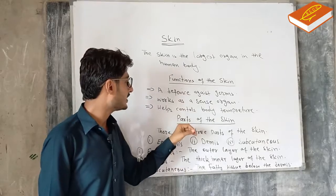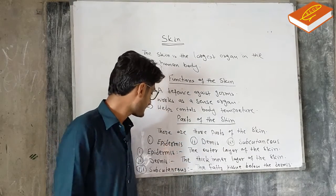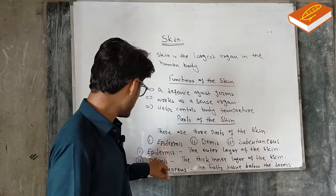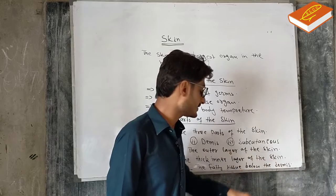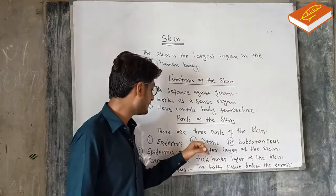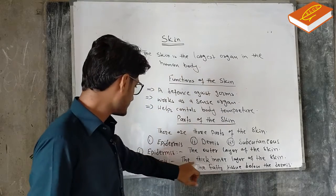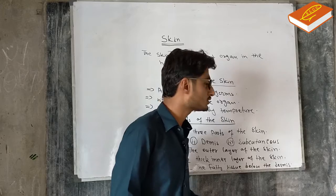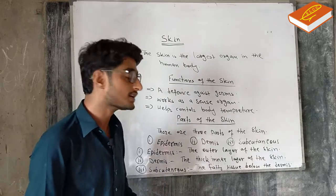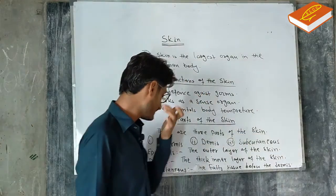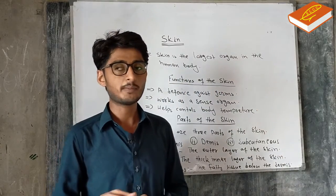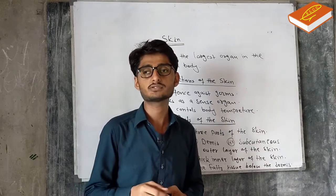There are three parts of the skin: number one, the epidermis — the outer layer of the skin; number two, the dermis; and number three, the subcutaneous layer, which is the innermost layer of adipose tissue.